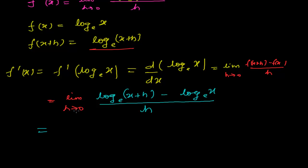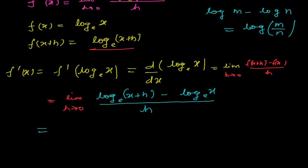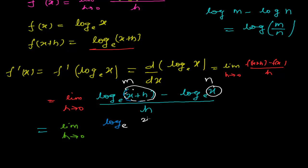I want to recall the logarithm formula we have learned: log M minus log N equals log(M divided by N). This is the formula of logarithm. Using this formula, with x + h as M and x as N, I will get the limit when h tends to 0 of log_e((x + h) divided by x), all divided by h.